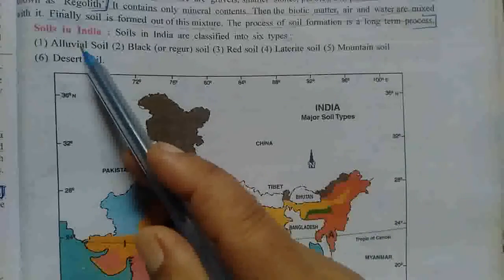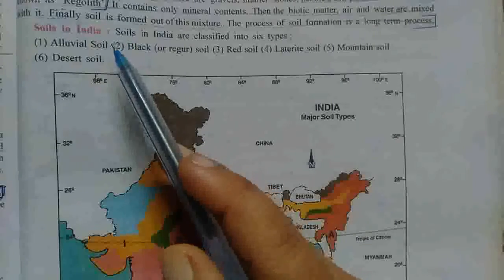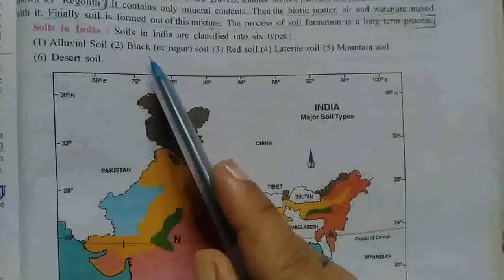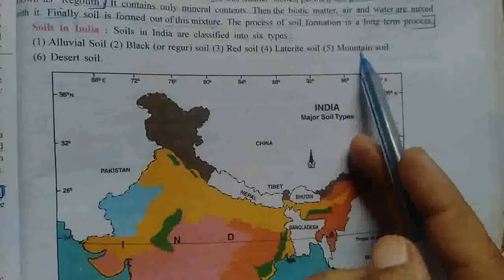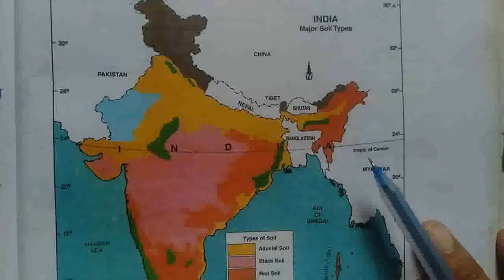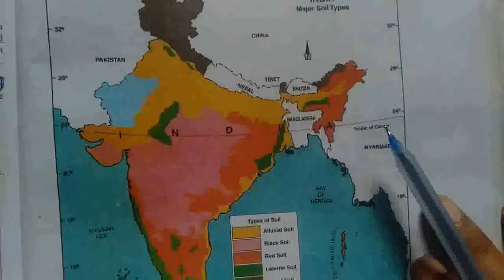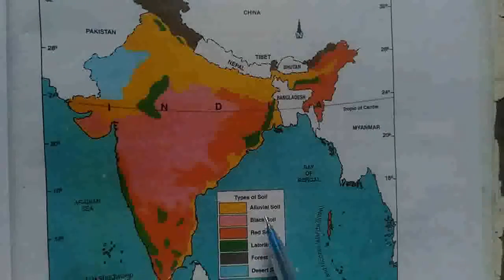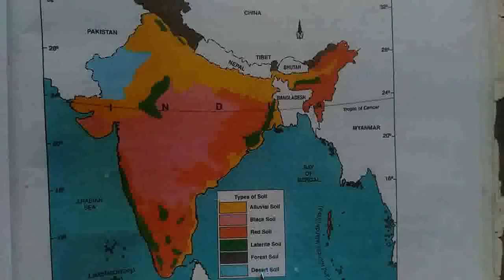Now, soil in India — हमारे देश के अंदर किस तरीके की soil देखने को मिलती है? जैसे-जैसे हम लोग अलग-अलग region में visit करते हैं, we see diversity in the soil. Soil in India is classified into six types: alluvial soil, black soil, red soil, laterite soil, mountain soil and desert soil. भारत देश के अंदर अलग-अलग six तरीके की soils मिलती हैं.